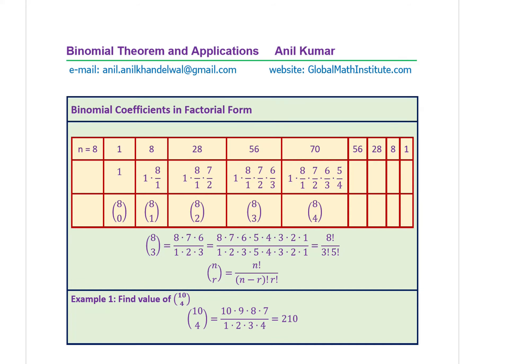Here is a question: if we're talking about some big number and only interested in calculating a few coefficients, how do we do so? This is binomial coefficients in factorial form. For (a+b)⁸, the coefficients include 1, 8, 28, 56, 70, and by symmetry the other side. In Pascal's triangle when N=8, the second coefficient is 8, which can be written as 1×8/1. Then 28 is obtained as 1×8/1×7/2, and 56 as 28×6/3, and 70 as 56×5/4.